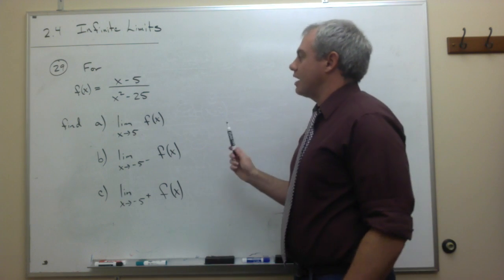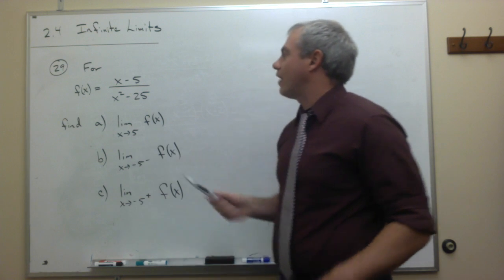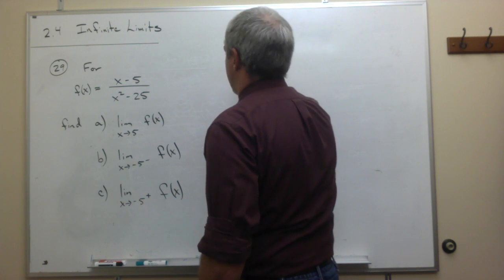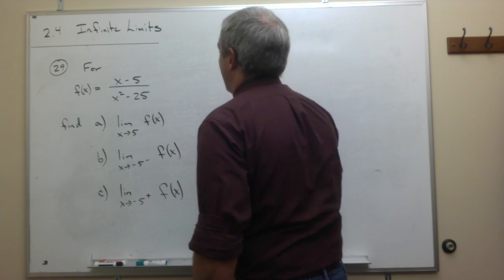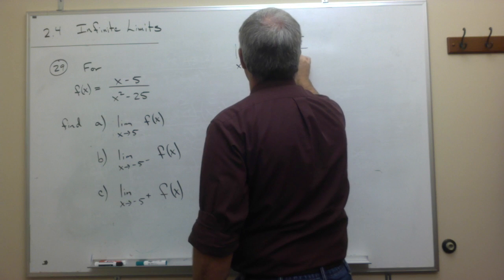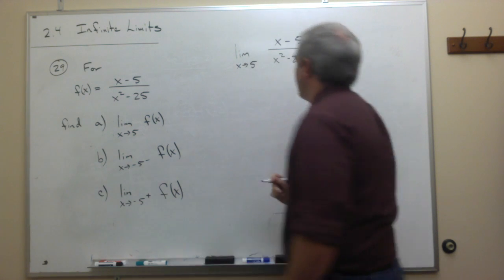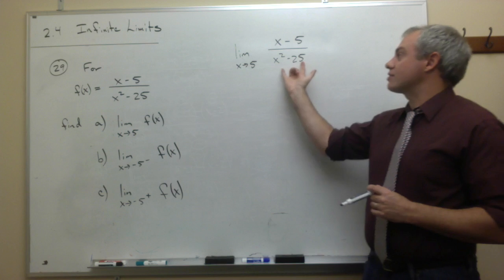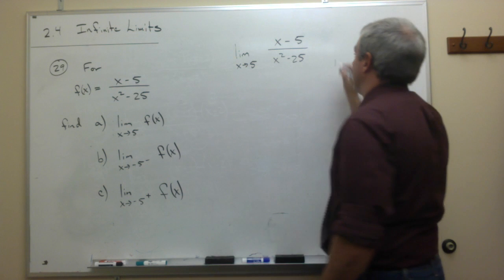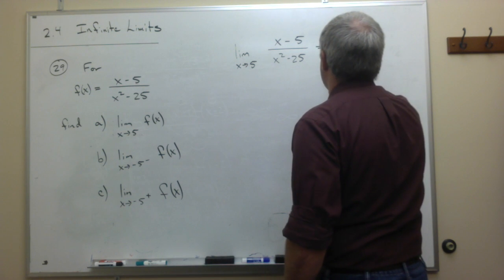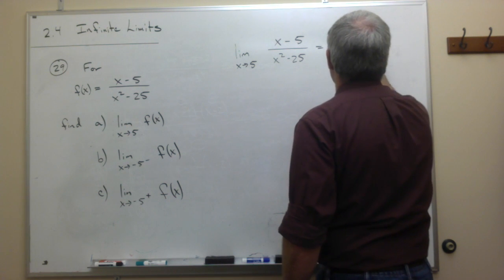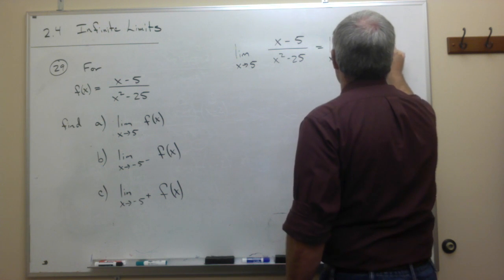Let's look at the limit as x goes to 5 of that function — the limit as x goes to 5 of x minus 5 over x squared minus 25. You might notice right off the bat that x squared minus 25 is the difference of two squares, so we can factor that. We get the limit as x goes to 5 of x minus 5 divided by x minus 5 times x plus 5.